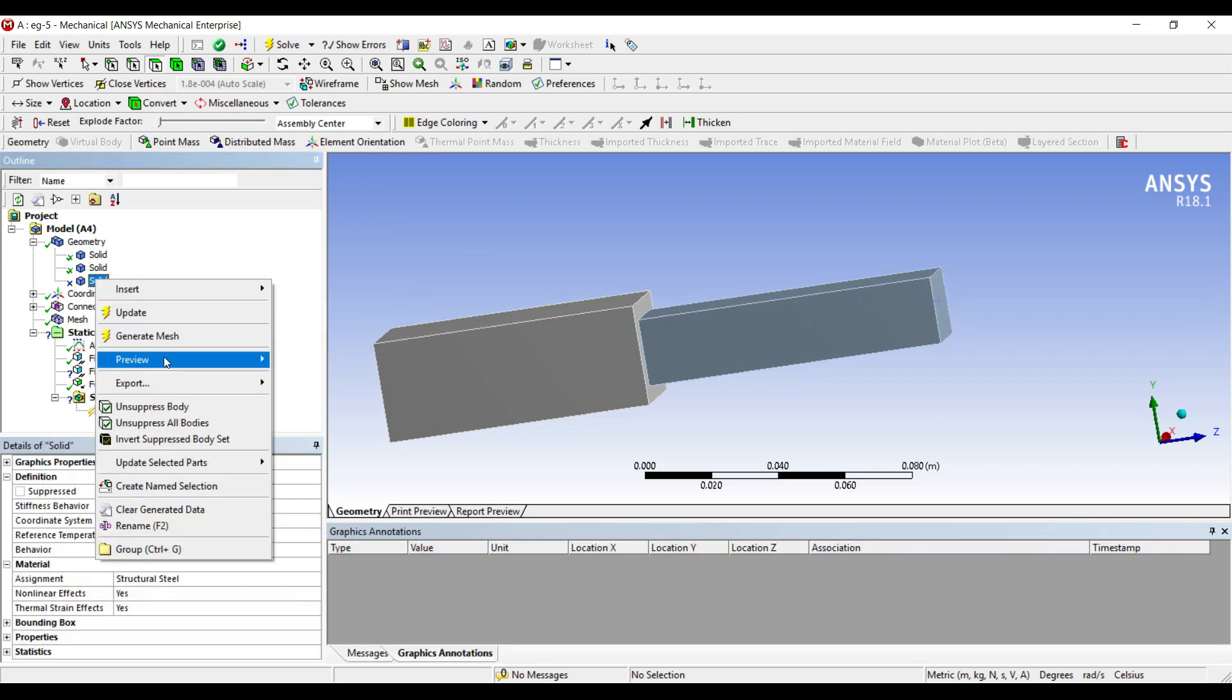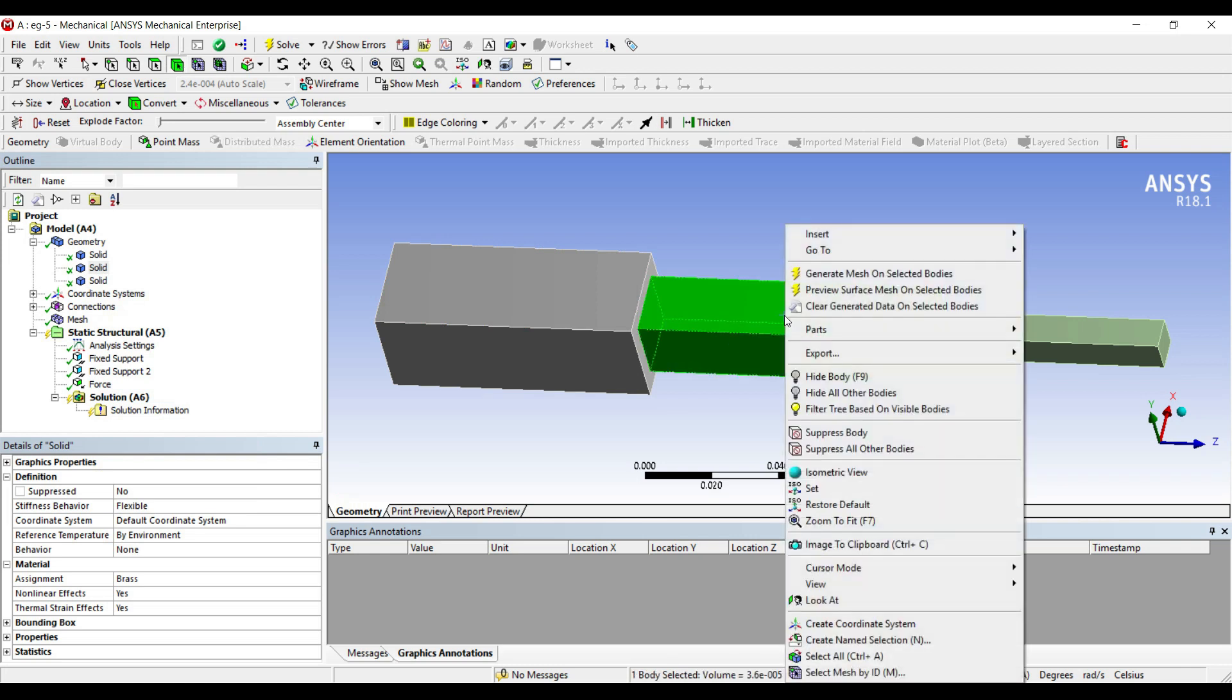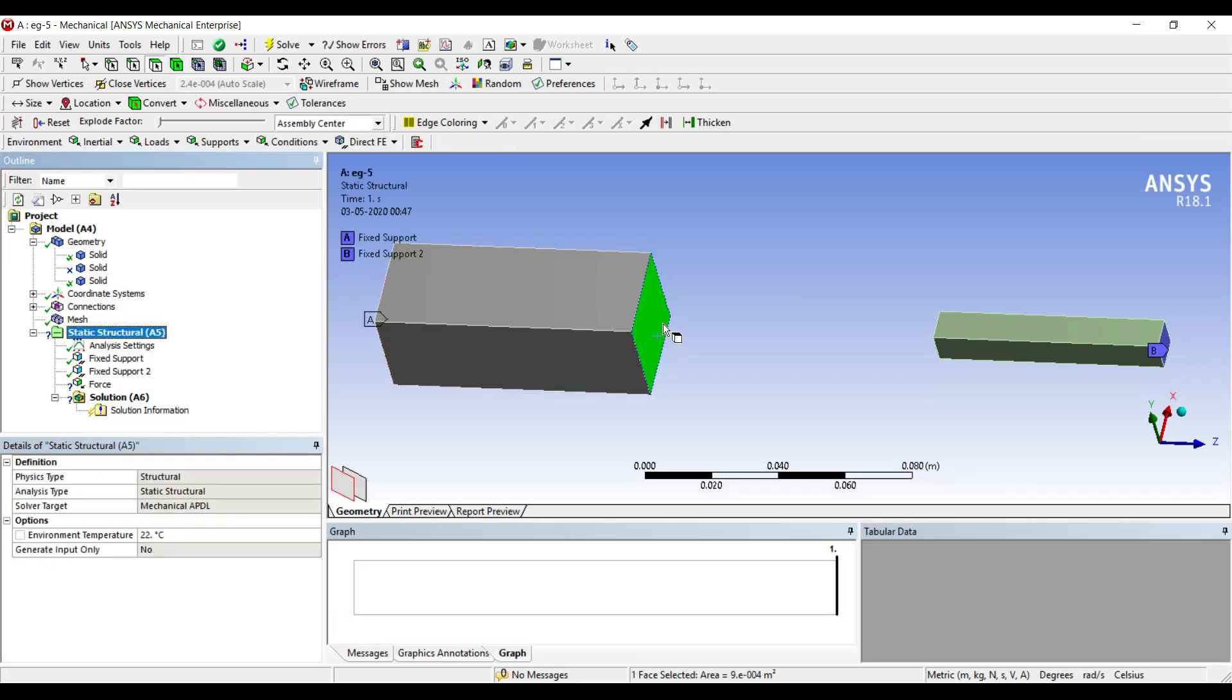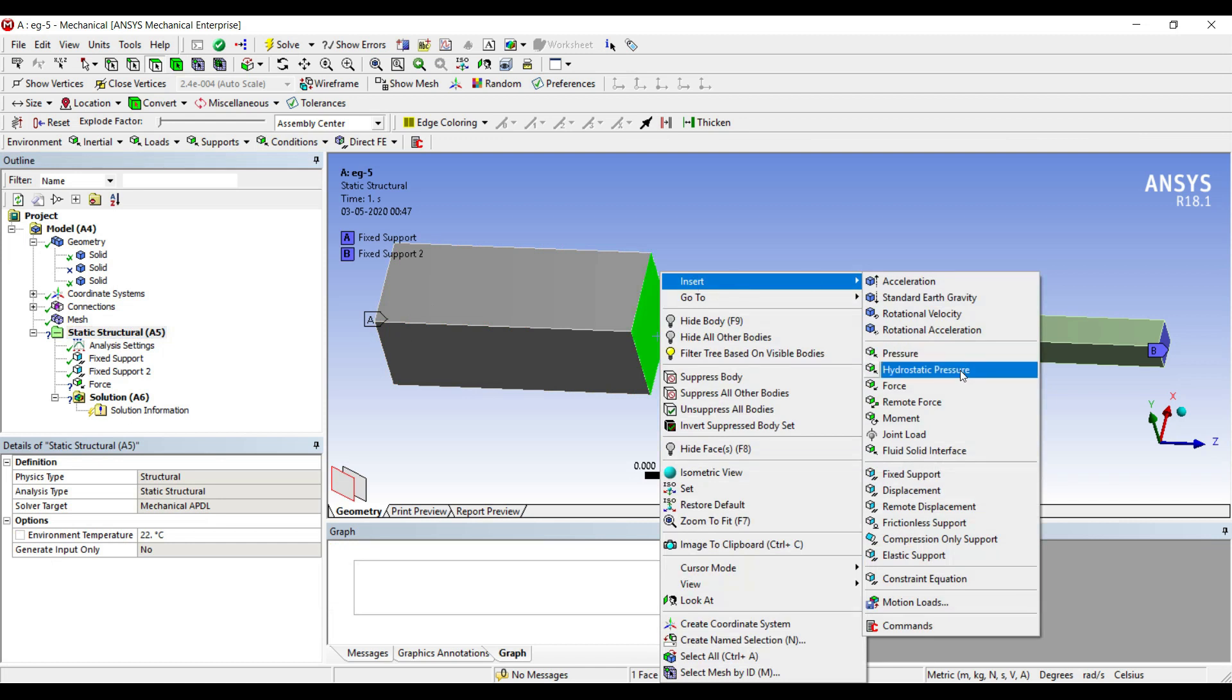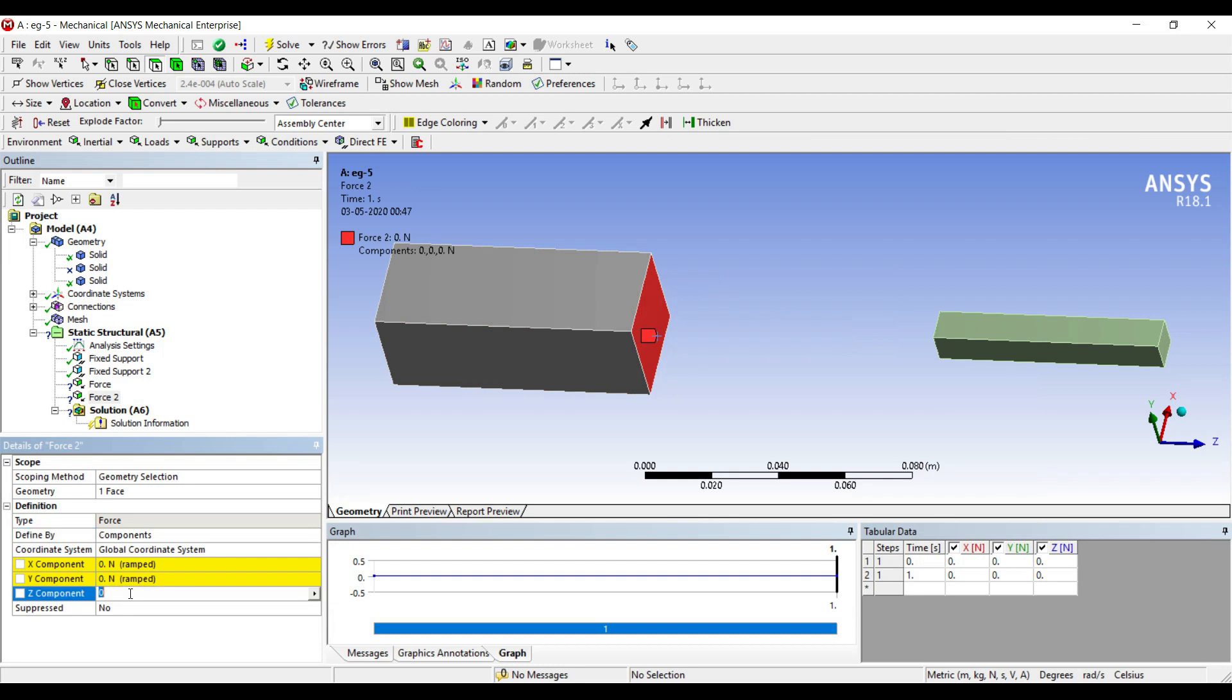Right click, unsuppress body, select this body, right click, suppress body. Now you can select this face, go to static structural, right click, insert, force. Change the vector to component, along z direction load is 20 kN.